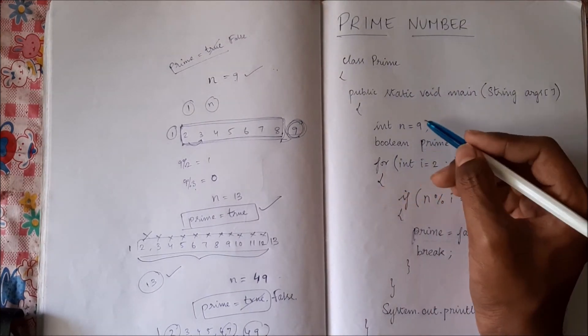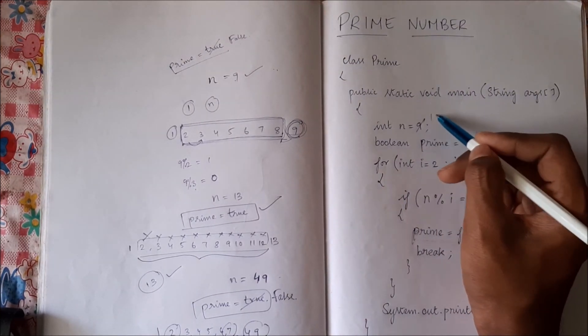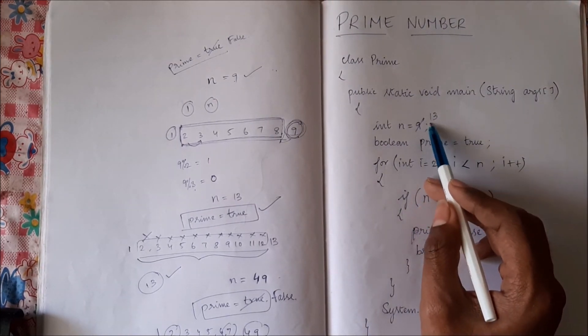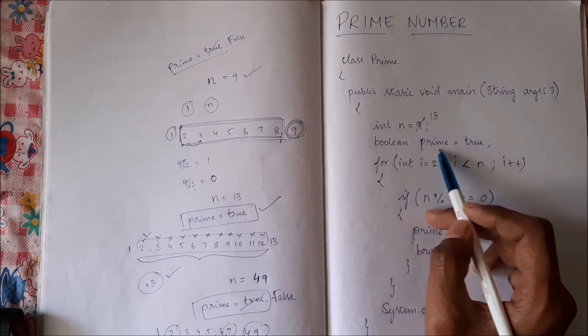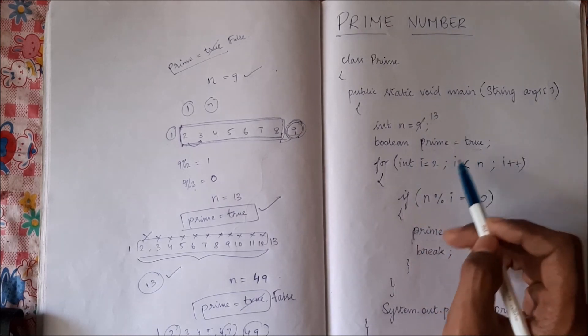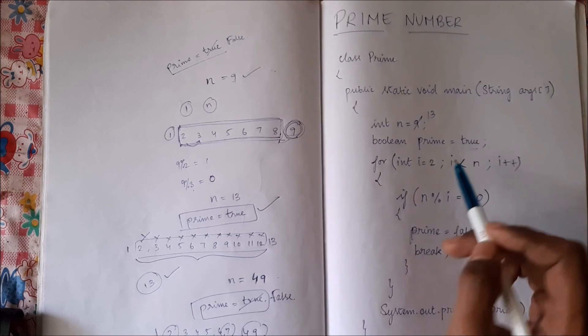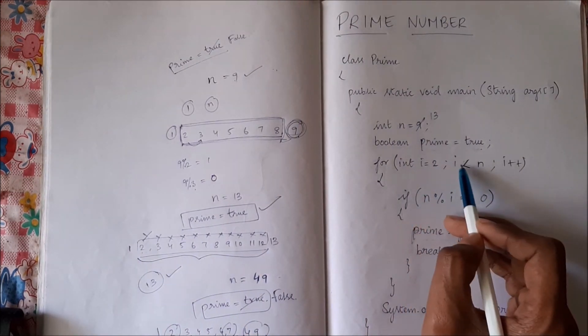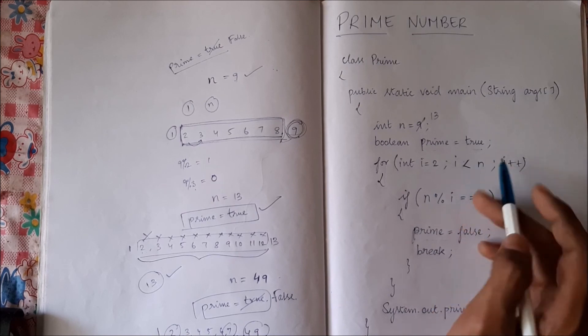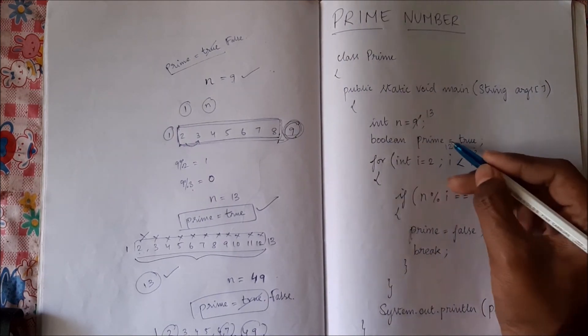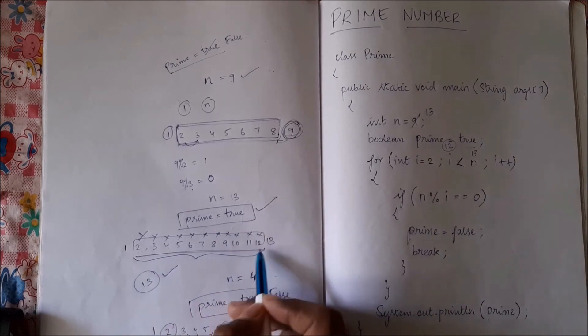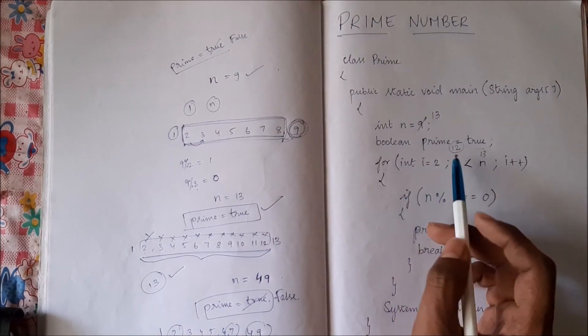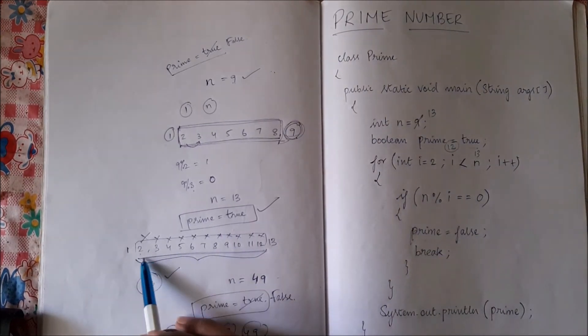So what if we change it to 13? So assumption, our number is 13. Assumption is that it is a prime number. We go inside the loop. We will check from 2 to 12. That is i equal to 2 to i less than n. n is 13, so i will go max up to 12. That is here we have seen i plus plus.